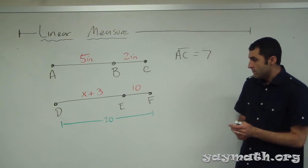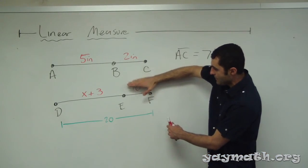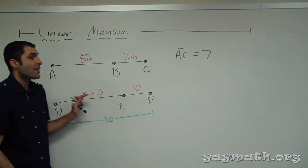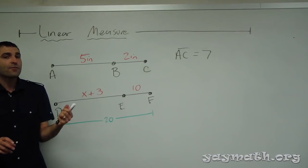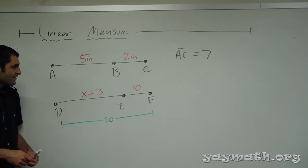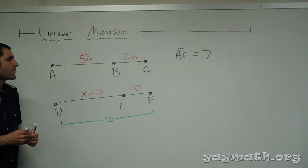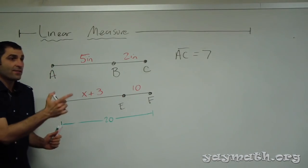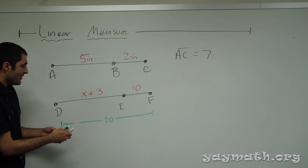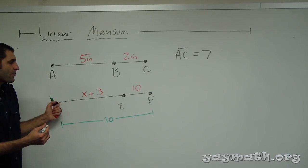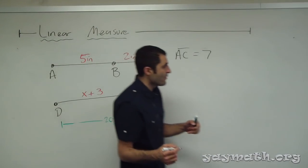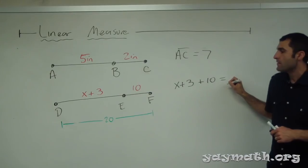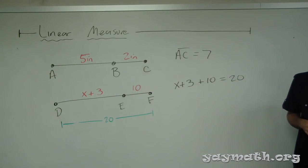Another method: ten minus three is seven, since x plus three needs to equal ten. You're trying to get to twenty, and ten plus ten is twenty, so what plus three is ten — it's seven. If you didn't see that right away, you can create an equation: x plus three plus ten equals twenty, and you can see that x is seven from there.